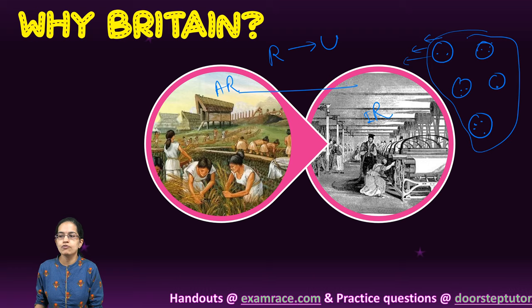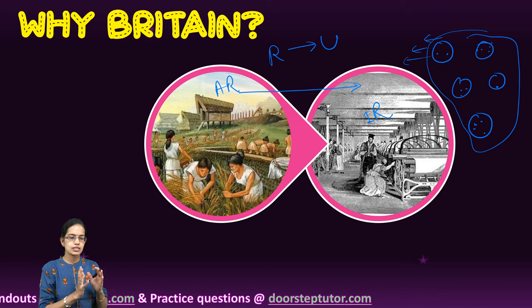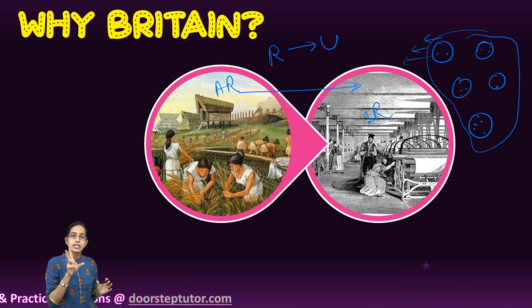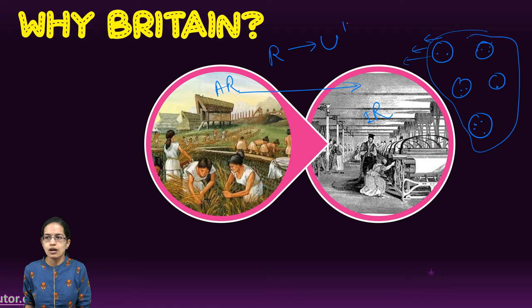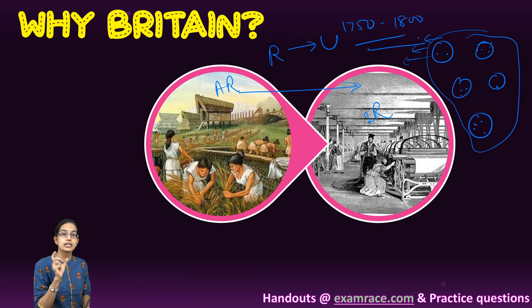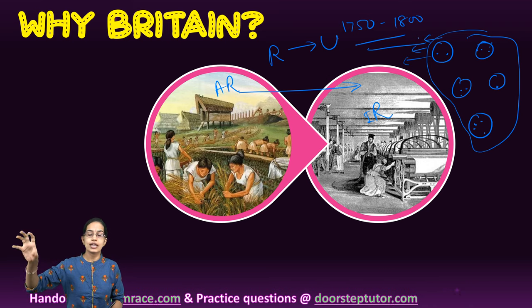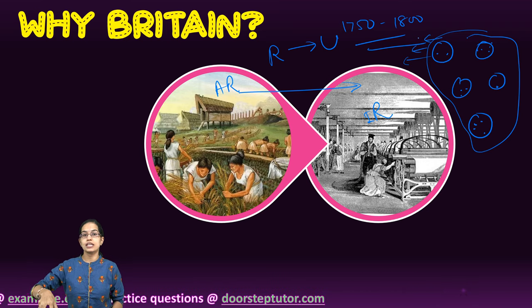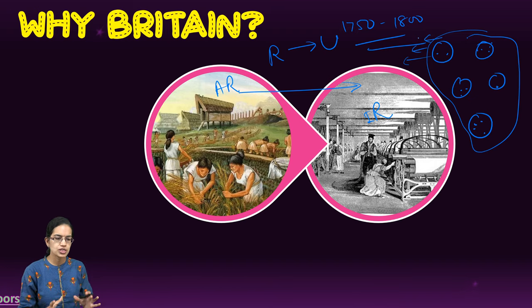There was a huge migration from rural areas to urban areas, and it was in the urban areas that the Industrial Revolution was most witnessed. It was a whole journey from agricultural revolution to industrial revolution. Of the 19 European cities between the 1750s and 1800s, 11 of them were in Britain — making Britain the epicenter of this industrial revolution.